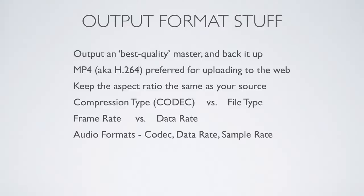We're going to talk about the difference between compression type and file type. Compression type, or codec, is the method used to take your file and make it smaller for the web. File type is what you'd call the wrapper. You can have different file types with the same compression type, and the file type has more to do with what piece of hardware is going to play back your video.